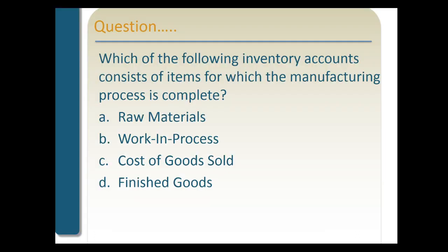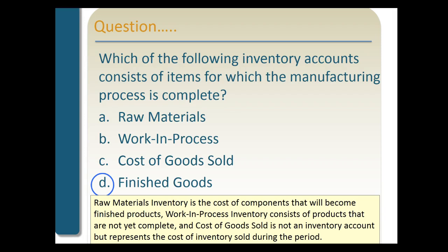Let's look at a question: which of the following inventory accounts consists of items for which the manufacturing process is complete? Is it A) raw materials, B) work-in-process, C) cost of goods sold, or D) finished goods? Raw materials inventory is the cost of components that will become finished goods. Work-in-process inventory consists of products that are not yet complete. Cost of goods sold is not an inventory account but represents the cost of inventory sold during the period. The answer is finished goods.